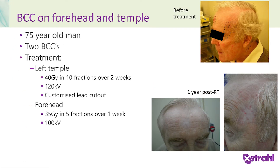This gentleman was 75 years old and had two basal cell carcinomas — one on the forehead and one on the temple. The left temple was treated with 40 Gy in 10 fractions over two weeks using 120 kV photons with a customised lead cutout. The forehead lesion, being smaller, was treated with 35 Gy in 5 fractions over one week with 100 kV photons. There was complete resolution of both lesions at one year after radiotherapy.